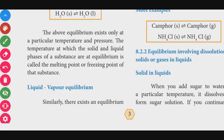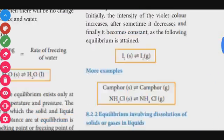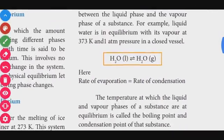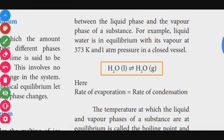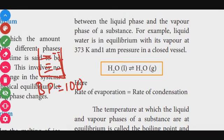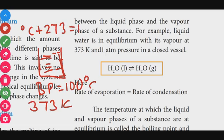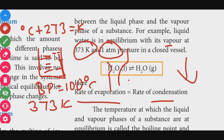Next, we will talk about liquid-vapor equilibrium. Liquid-vapor equilibrium exists between the liquid phase and the vapor phase. For example, water at its boiling point — 100 degrees Celsius or 373 Kelvin — exists in equilibrium with its vapor at that temperature and pressure. The rate of evaporation and the rate of condensation become equal, making it an equilibrium process.